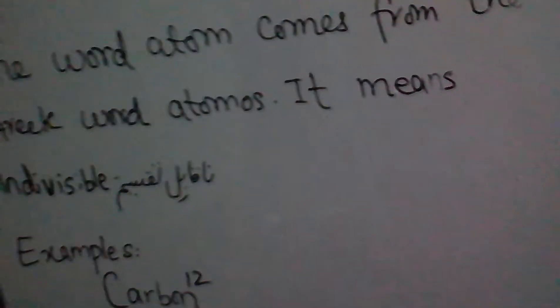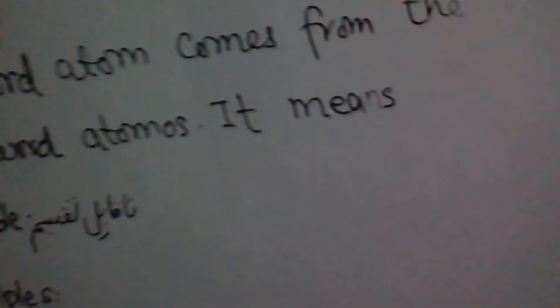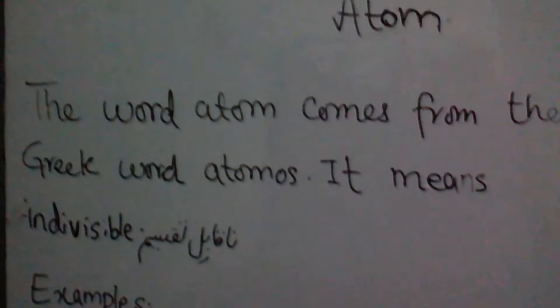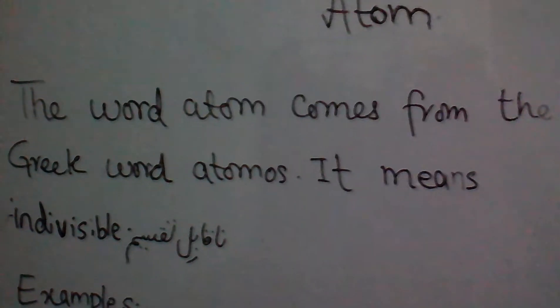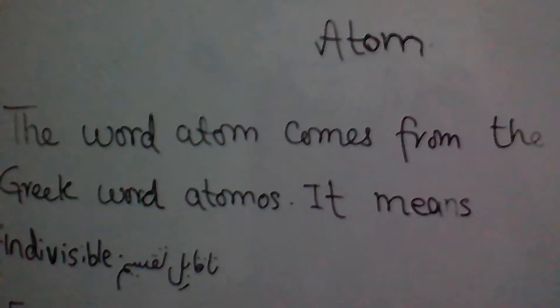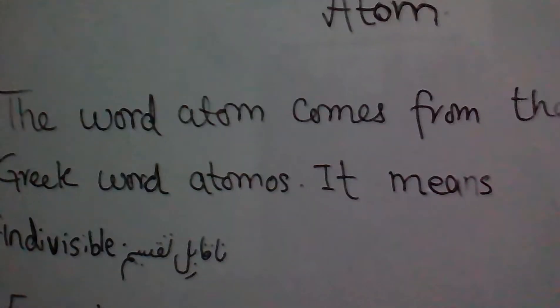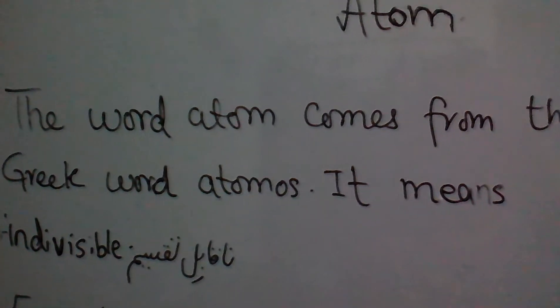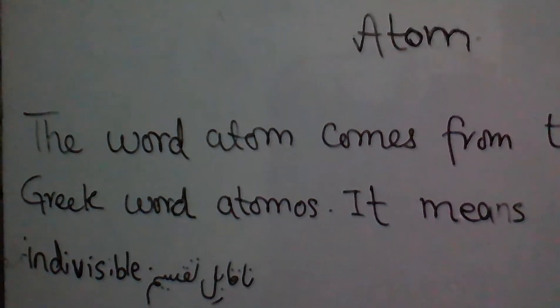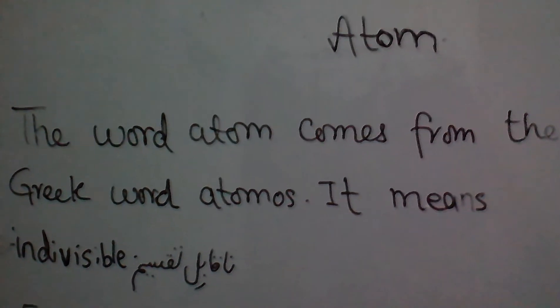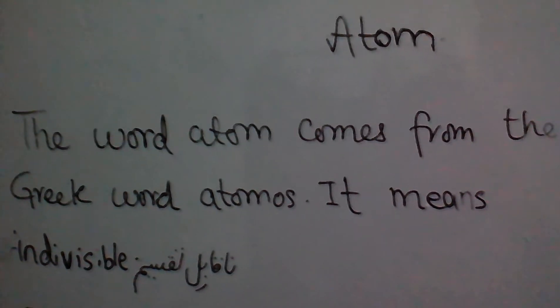Atom is a substance which can neither be created nor destroyed during a chemical reaction. That is, ye chemical reaction ke turaan mein na hii is se koi cheez ban sakti hai aur na hii yeh khud toot sakti hai.